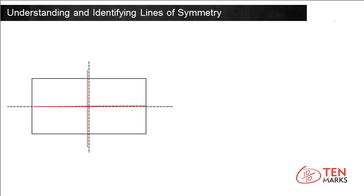But if you fold it along the diagonal, the two halves, while equal in size, will not fold over each other completely. The figure would look like this. The two halves do not fold over each other perfectly, so that is not a line of symmetry. A rectangle only has two lines of symmetry.